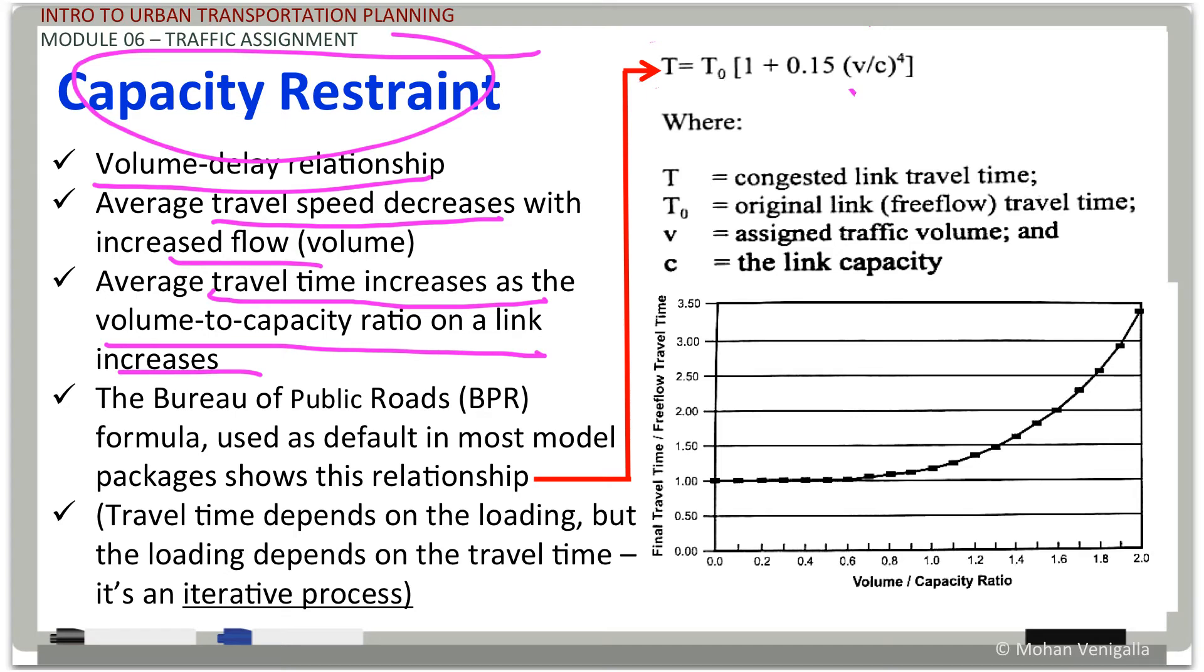How does it look in terms of a chart? So here we have the free flow travel time, and it goes pretty much parallel to the x-axis to some extent, even if volume capacity ratio is up to maybe 0.765, something like that. And then the travel time keeps going up, but not like that. In this case, you see a travel volume capacity ratio even at two. So this is the relationship they proposed.